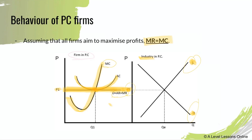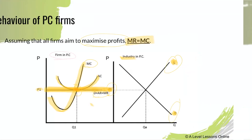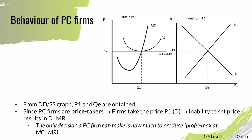Demand and supply determine the price that all sellers take. That price, when intersecting with the MC curve, puts the firm at the profit-maximizing level. The AC curve is then there to determine what type of profit they earn — in this case, normal profits, since AC equals AR at that point.